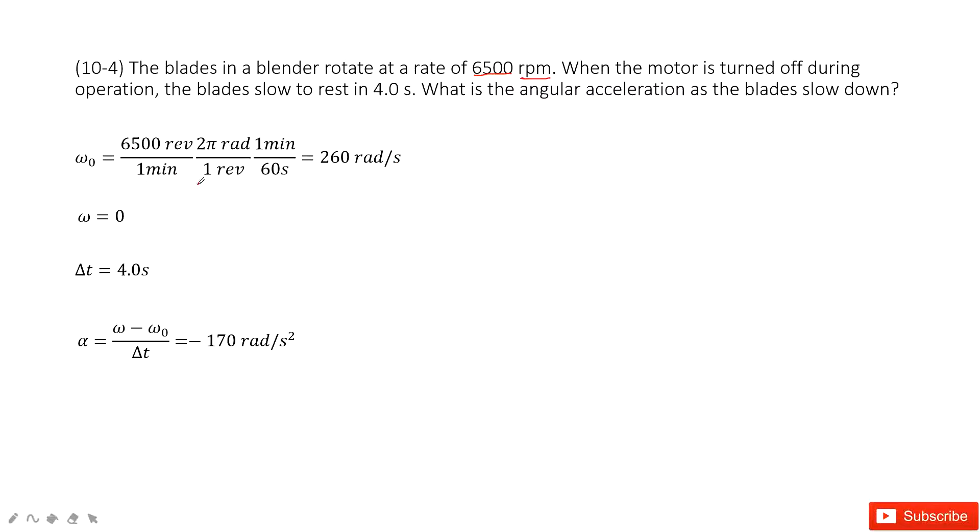So this is how you can convert a unit. This revolution is one circle. So one circle is 2π radians and one minute is 60 seconds. Then you get the initial angular velocity ω₀.